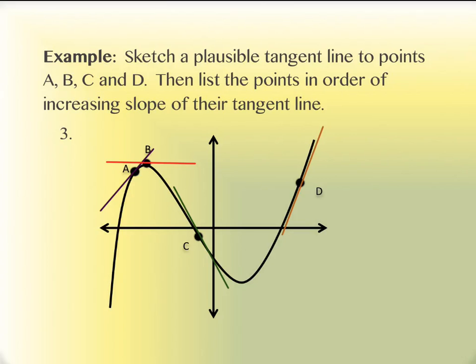The first tangent line drawn there at point A is a purple line. What can you tell me about the slope of that line? It's positive, right? That's an important feature. Is there another slope on here that's positive? At point D, which one is more positive? D. How do you know? It's steeper.